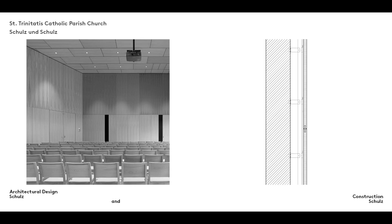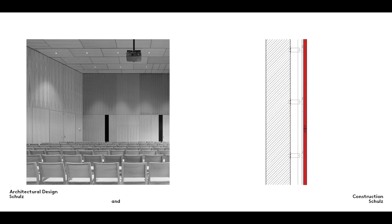Walls can also be finished in a higher quality material such as veneered wood particle board, for example. In order to compensate for tolerances in the shell construction and to ensure that the boards are fitted accurately using narrow joints, the wall is decoupled from the facing using a system of battens and counter-battens or spacers.